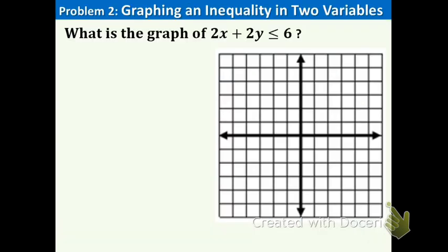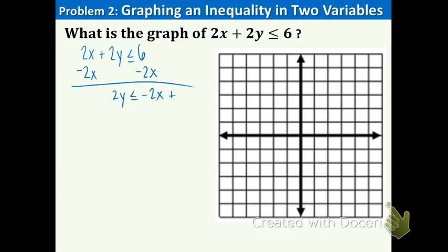Now one more example: 2x + 2y ≤ 6. This time the y is not by itself, but we know how to fix that. First, subtract 2x from both sides: 2y ≤ −2x + 6. Then divide everything by 2: y ≤ −x + 3. There is our inequality in slope-intercept form.